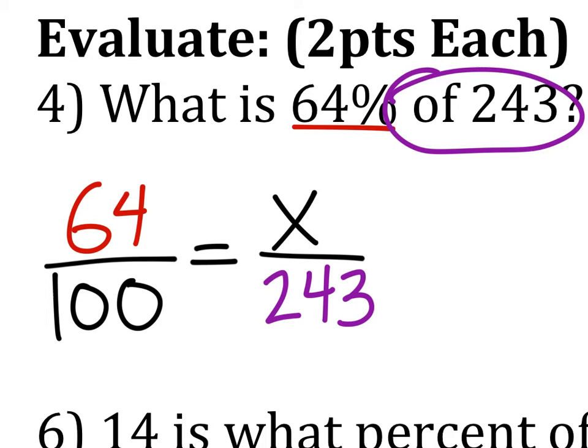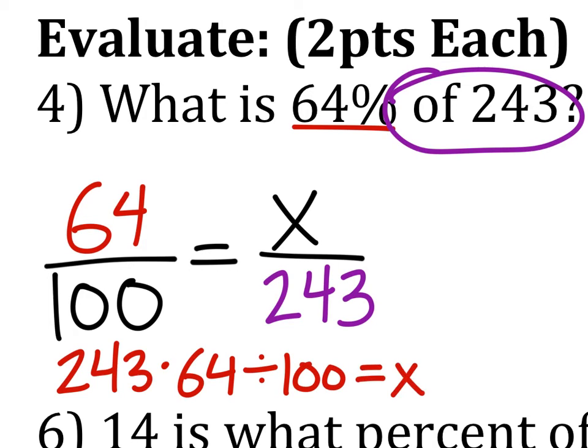There's our fish symbol. So, in this one we've got 243 times 64 divided by 100 equals x is the fishy method.